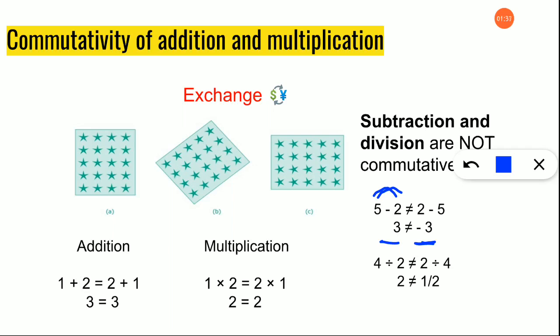Now let's check for division. Four divided by two gives you two. If you interchange the places — two divided by four — the answer is one half. Two and one half are not equal. Hence subtraction and division are not commutative.